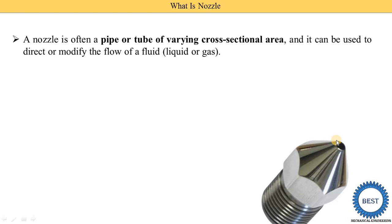The nozzle has different types, which we will discuss in the next video. The cross-sectional area may be reducing or increasing depending on the type of nozzle.